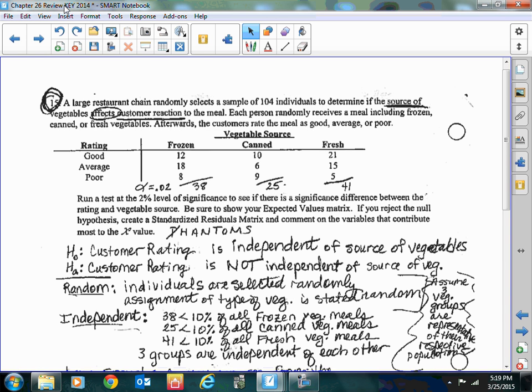Honestly, I think you could probably go either way on this question as far as it being independent or homogeneous, and I'm going to tell you why. Up in the top, it says a large chain randomly selects this to see if the source of vegetables affects customer reaction. When it says does it affect customer reaction, I'm basically wanting to see is the food source independent of the rating. By the way, that 2% level of significance means your alpha.